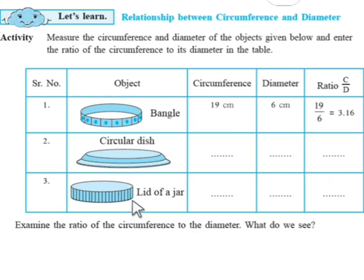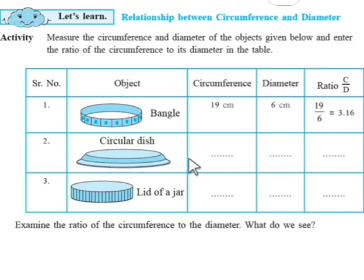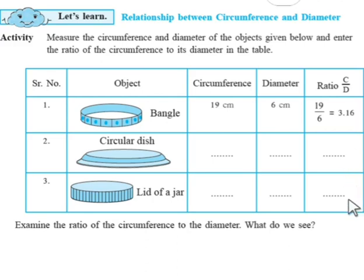Similarly, I took any lid of the jar and I got the circumference as 29 cm and diameter as 9.3 cm. The ratio of circumference to the diameter, that is 29 divided by 9.3, is 3.11. You will take any dish and any lid of a jar at your place and find it out. After measuring the circumference and diameter, you will find the ratio, as I got 3.07 for the circular dish and 3.11 for the lid of a jar.